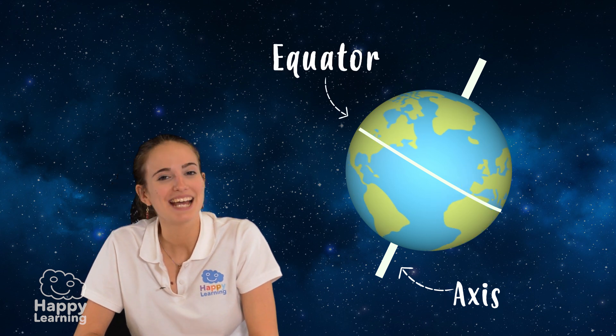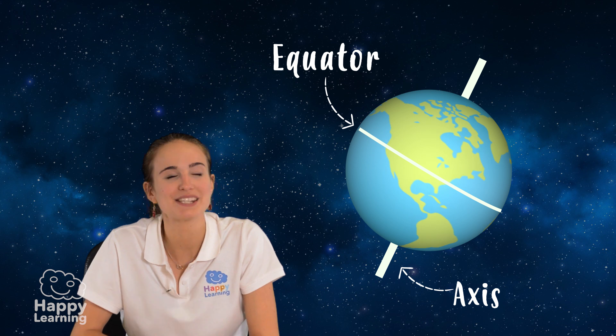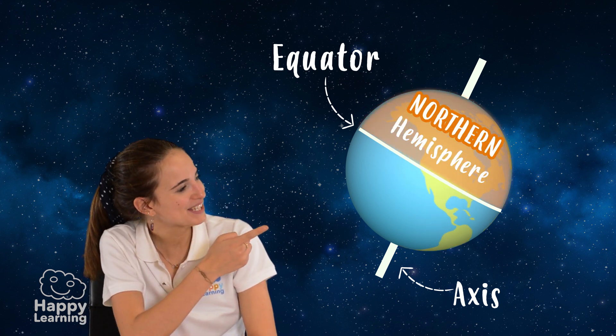Our planet is divided into two parts. It's separated by an imaginary line called the equator, and this imaginary line separates the planet into two hemispheres: the northern hemisphere and the southern hemisphere.